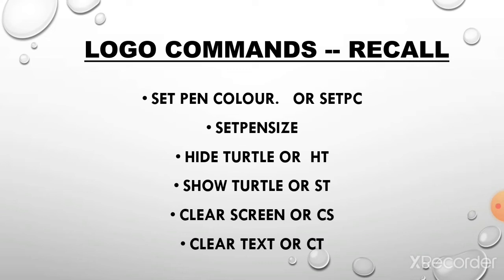The next one is hide turtle, or the HT command. Hide turtle means the turtle will hide from the drawing area and become invisible. If you want to bring the turtle back, we use the show turtle command, or ST command. The next one is clear screen, which is used to erase the drawing area. Clear screen clears all drawing lines and brings the turtle back to its home position. Clear text, or CT command, helps to clear the commander window — it clears all the commands typed there.